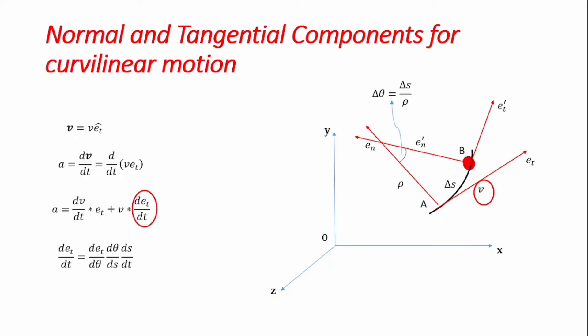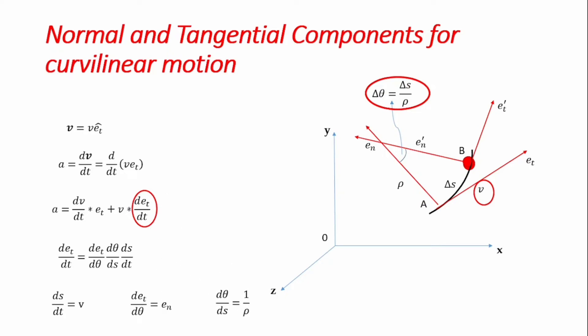Working further, deₜ/dt = (deₜ/dθ)·(dθ/ds)·(ds/dt). We've derived that ds/dt = v (rate of change of distance with time is velocity), that deₜ/dθ = eₙ, and that dθ/ds = 1/ρ. Combining these terms, deₜ/dt = (v/ρ)·eₙ.